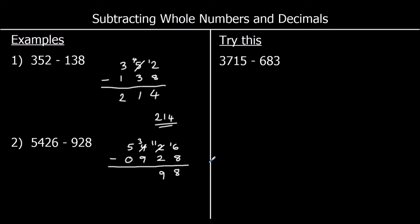In the hundreds, I've got 3 take away 9. I don't want to do that, so I'm going to steal one of the thousands, and that's worth 10 in the hundreds. So 13 take away 9 is 4. And in the thousands, I've got 4 take away 0, which is 4. So my answer is 4,498.